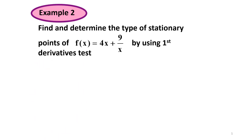Example 2. Find and determine the type of stationary points of f(x) equal to 4x plus 9 over x by using the first derivative test. First we have to find f'(x). So f'(x) is equal to 4 minus 9 over x squared.